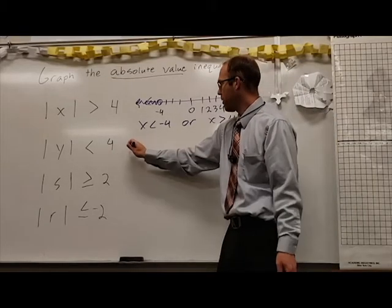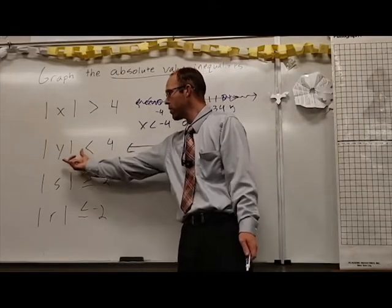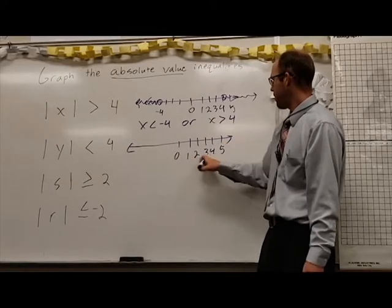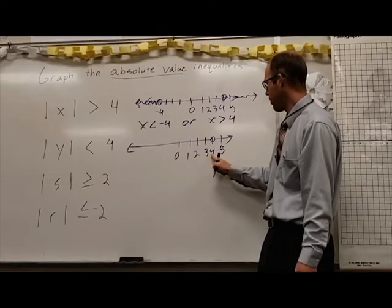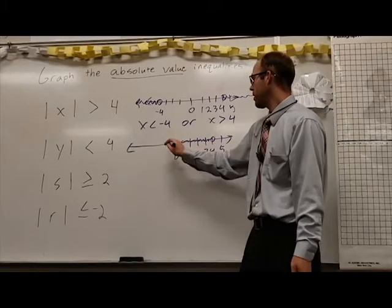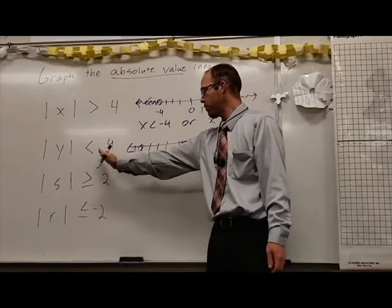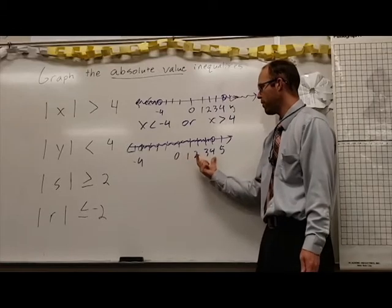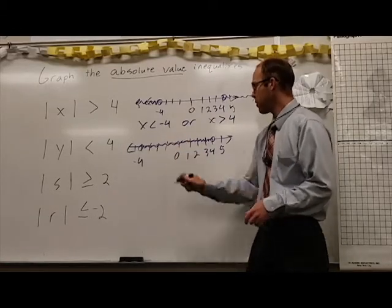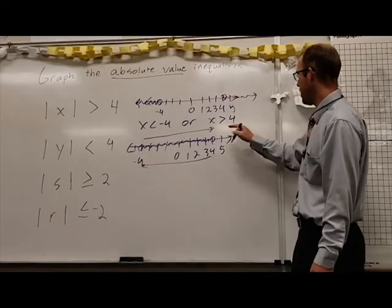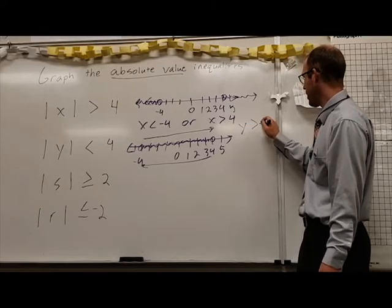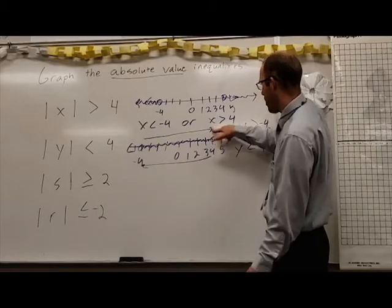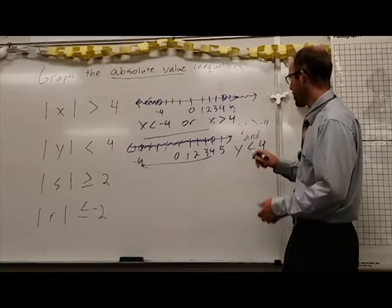Our absolute value this time is not bigger than four, but less than four — the distance from zero is less than four. Here we have four, but our numbers need to be closer than that to zero. So that would be numbers between zero and four, and on the other side, if we're closer than four, we're in between negative four and positive four. This uses the word 'and' because we have y is greater than negative four and y is less than positive four — we keep where they overlap.